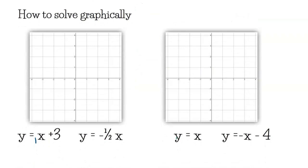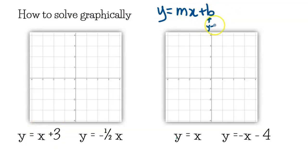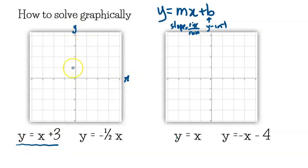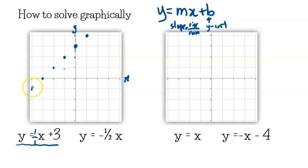We're going to graph these lines. For y = x + 3, remember that y = mx + b, where b is the y-intercept and m is the slope as rise over run. We start at the y-intercept of 3, going up the y-axis to 3, and put a dot there. The slope is 1 over 1, so we rise 1 and run 1, or rise negative 1 and run negative 1, to draw our first line.